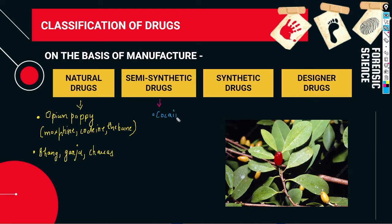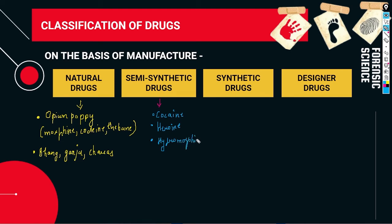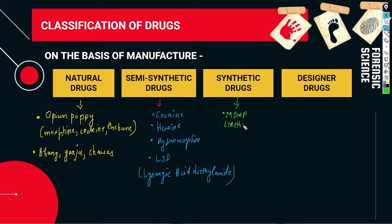Next are semi-synthetic drugs — from these you can get cocaine, hydromorphone, heroin, and LSD. LSD is lysergic acid diethylamide. Then synthetic drugs — MDMA and PCP. MDMA is methylenedioxymethamphetamine. You have to remember the full forms: LSD is lysergic acid diethylamide, MDMA is methylenedioxymethamphetamine. These full forms are very important.